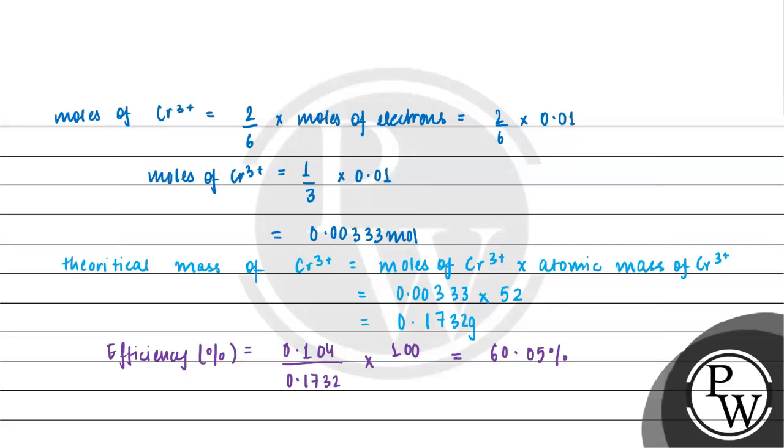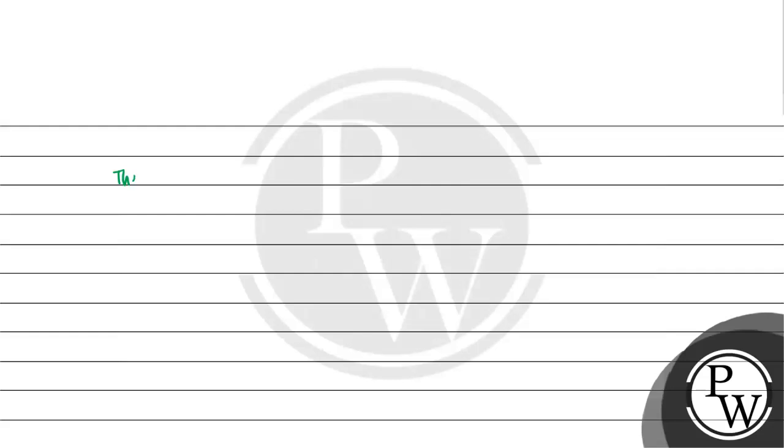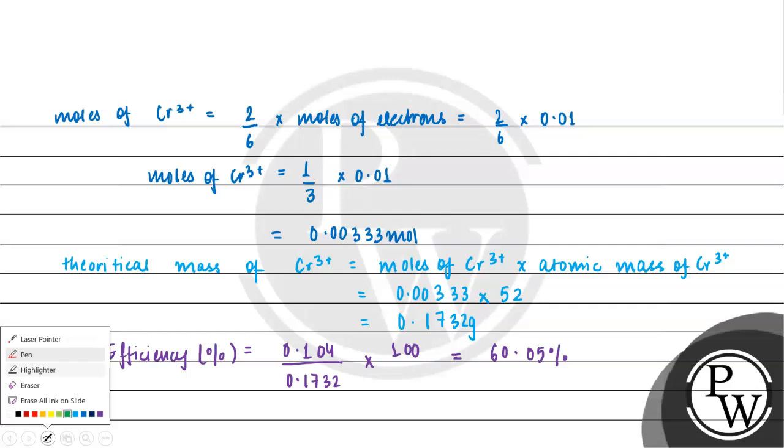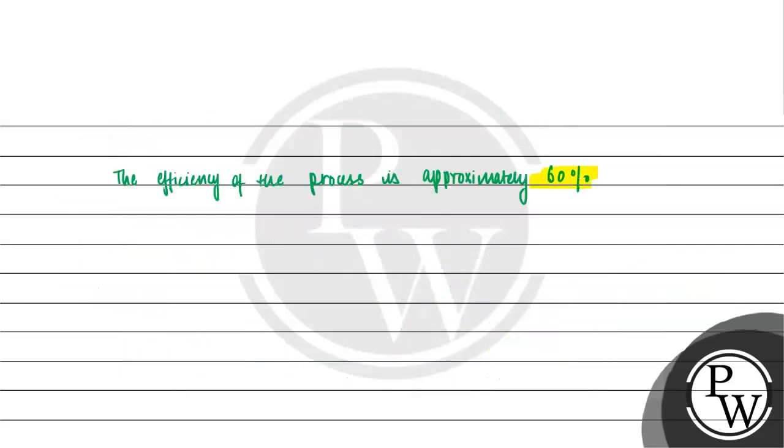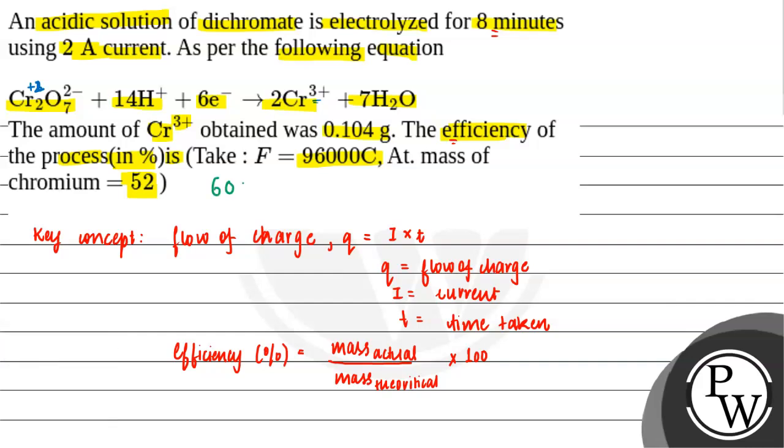This equals 60.05 percent. So the efficiency of the process is approximately 60 percent. This will be the final answer - 60 percent.